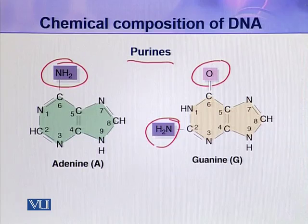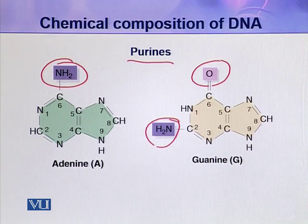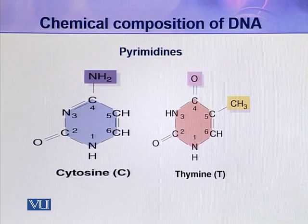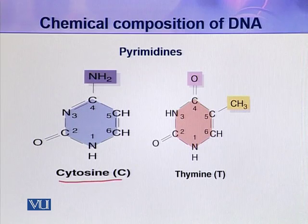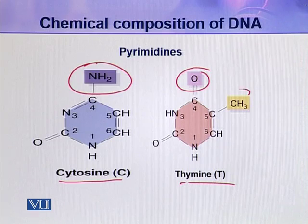The nitrogenous bases are conventionally numbered, but no prime designation is given, to distinguish them from the numbered atoms in the pentose sugar. The next two bases are pyrimidines: cytosine and thymine. These two are slightly different from each other and are derivatives of the parent compound pyrimidine.